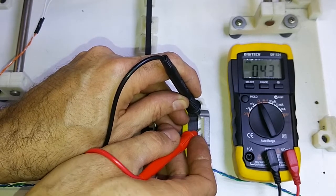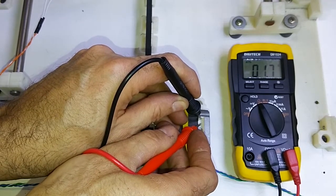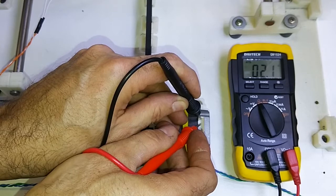We've got 4.2 ohms there, and there's usually a center tap, so the pin between—it's usually a center tap. And it should be half the resistance. So there we go, 2.1 ohms.